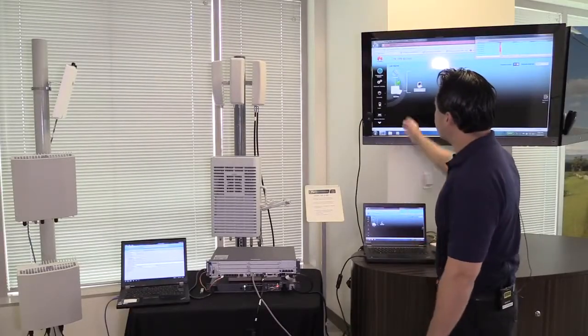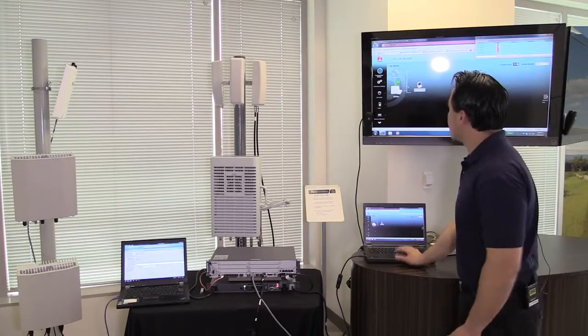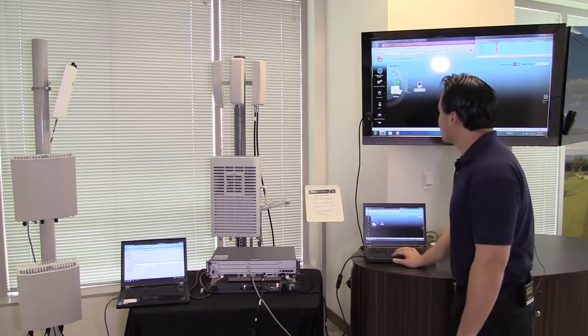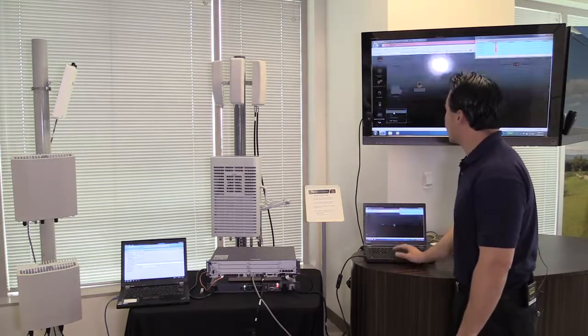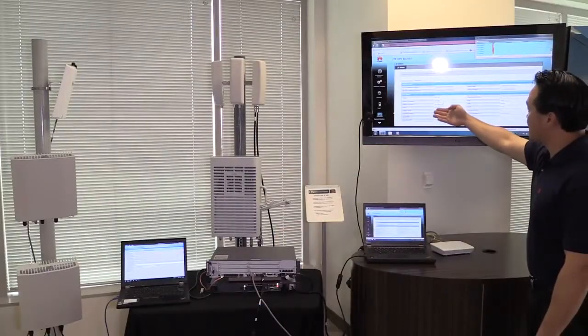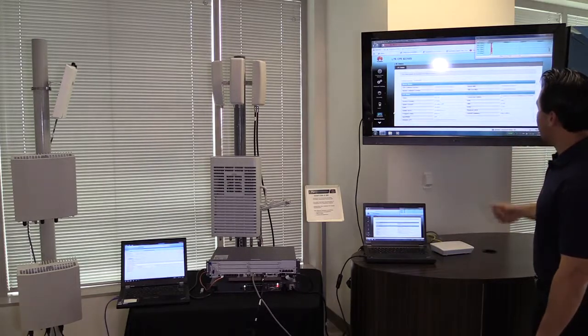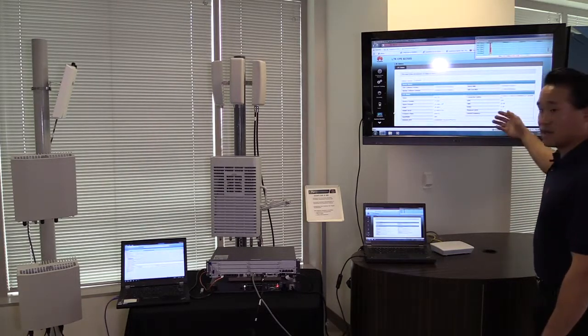So here, we have the interface to the CPE, and you can see some of the settings that we can set on there. System monitoring, actually check the status of what our signal is, and we can see that's a 4G LTE. Here's some of our signal levels, the frequency band, the bandwidth, and the physical cell ID, and also center frequency.